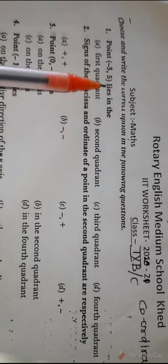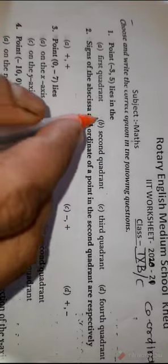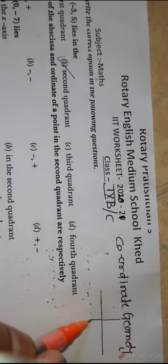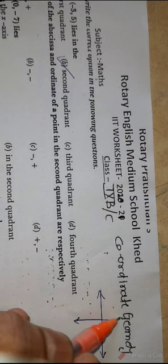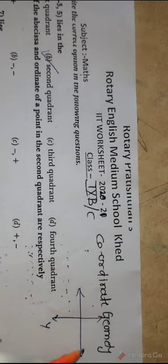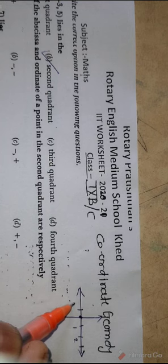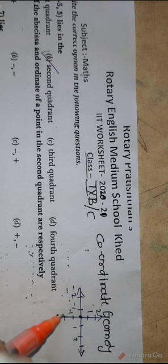From that, the first question is: point (-3, 5) lies in which quadrant? It lies in the second quadrant. As everybody knows, this is the x-axis, this is the y-axis. Here all positive integers are coming; this is the origin. On this side, minus one, minus two; above, one, two positive; and here minus one, minus two.